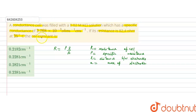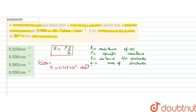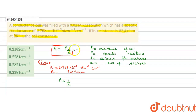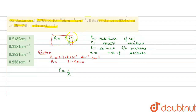We are given the value of specific conductance k = 2.768 × 10⁻³ ohm⁻¹ cm⁻¹, and resistance = 82.4 ohm. Specific resistance ρ is related to specific conductance as ρ = 1/k. So we substitute ρ = 1/k into the formula to calculate the cell constant l/a.